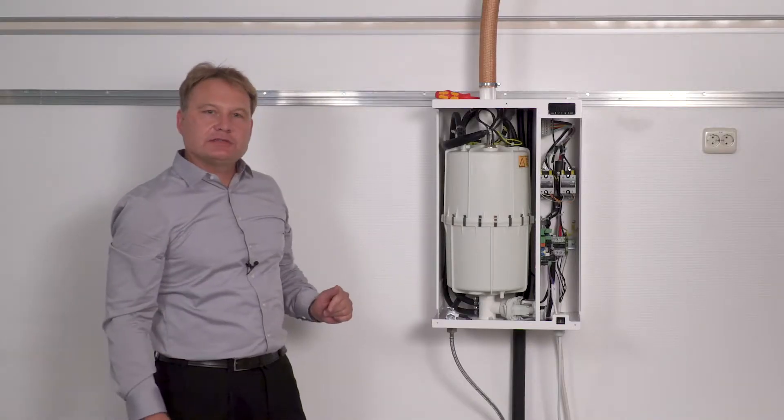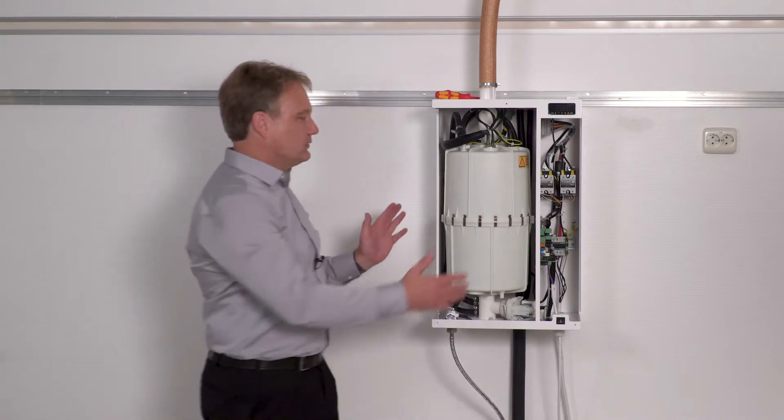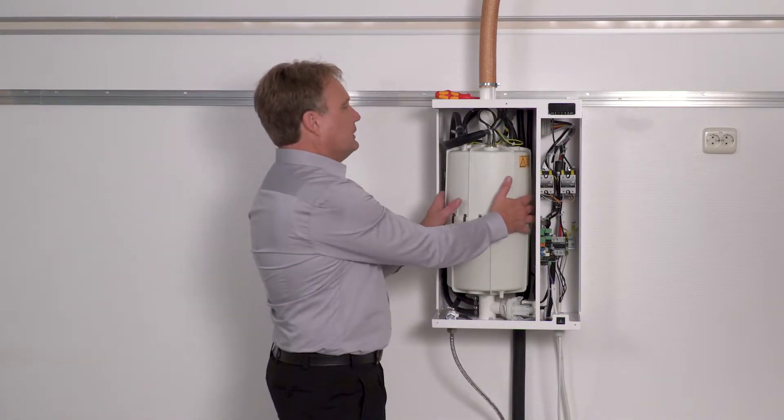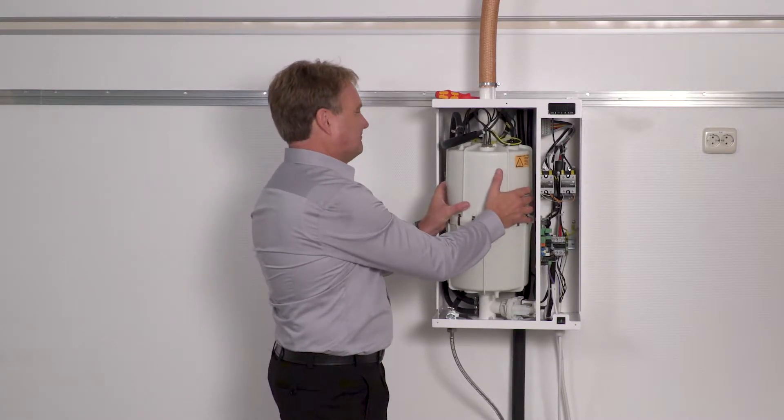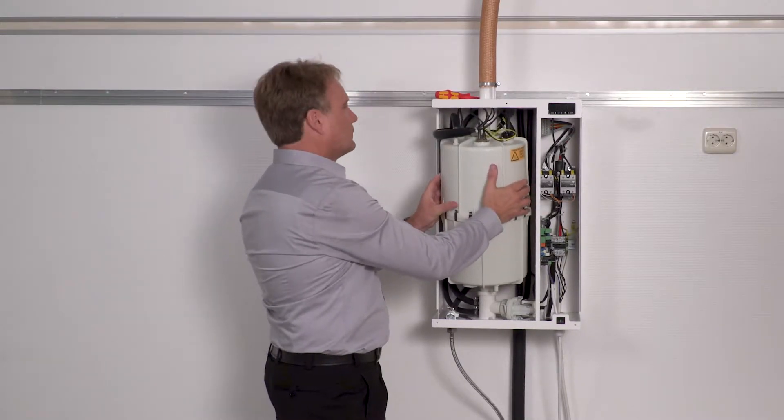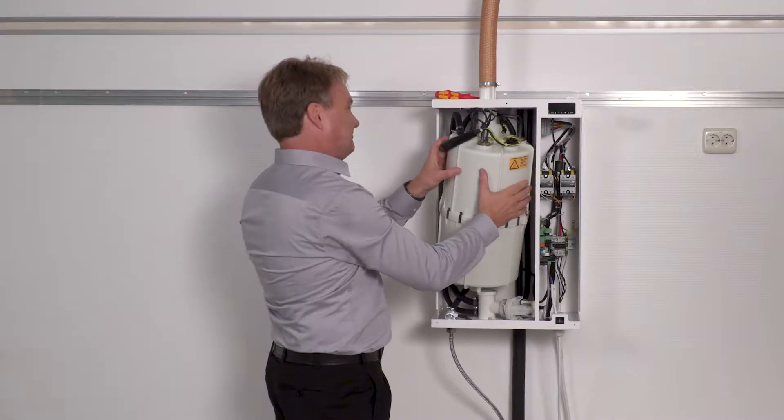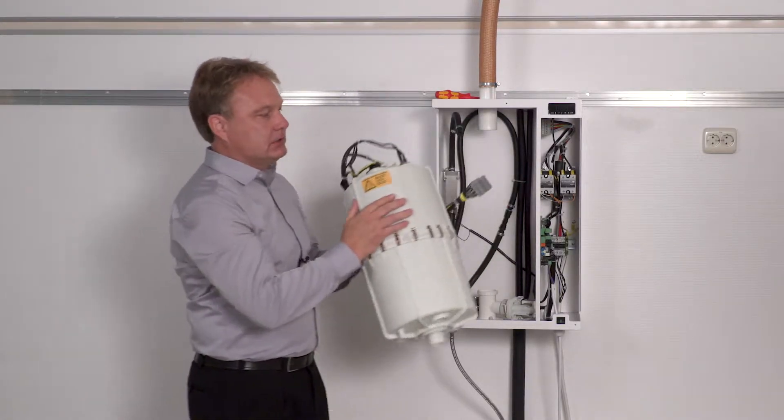Now I can use both hands to remove the steam cylinder from the unit. To do so, I grab the steam cylinder with my hands, turn it and pull it a little, and can then remove the steam cylinder.